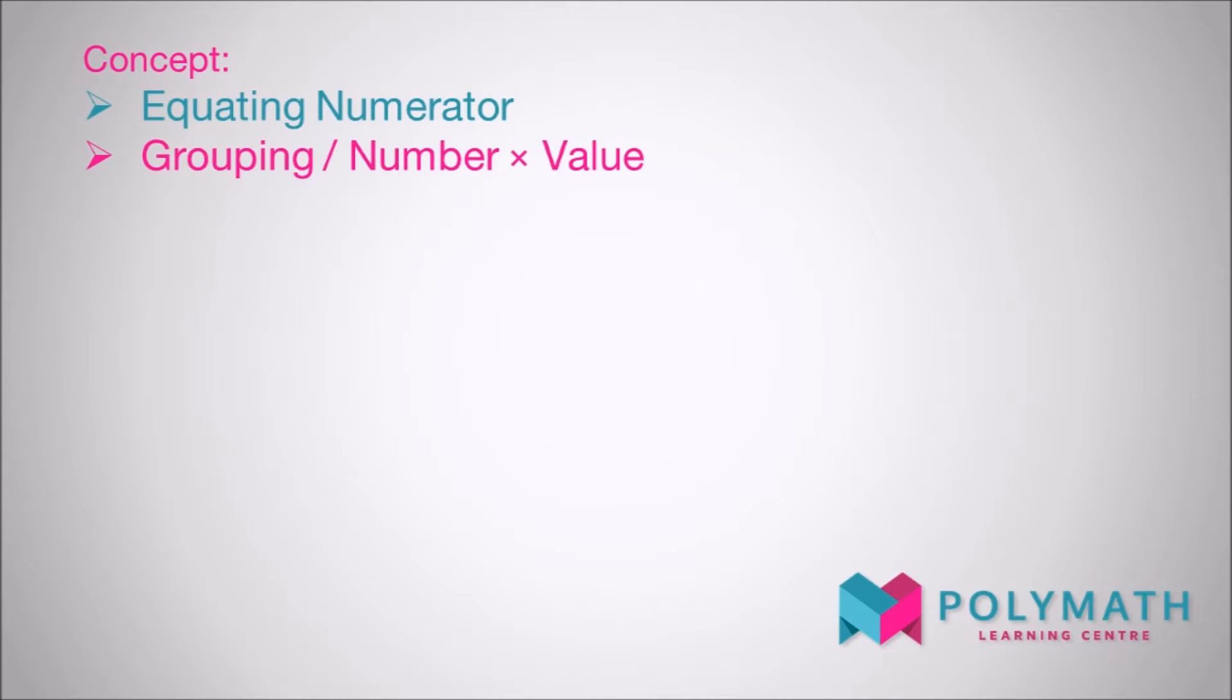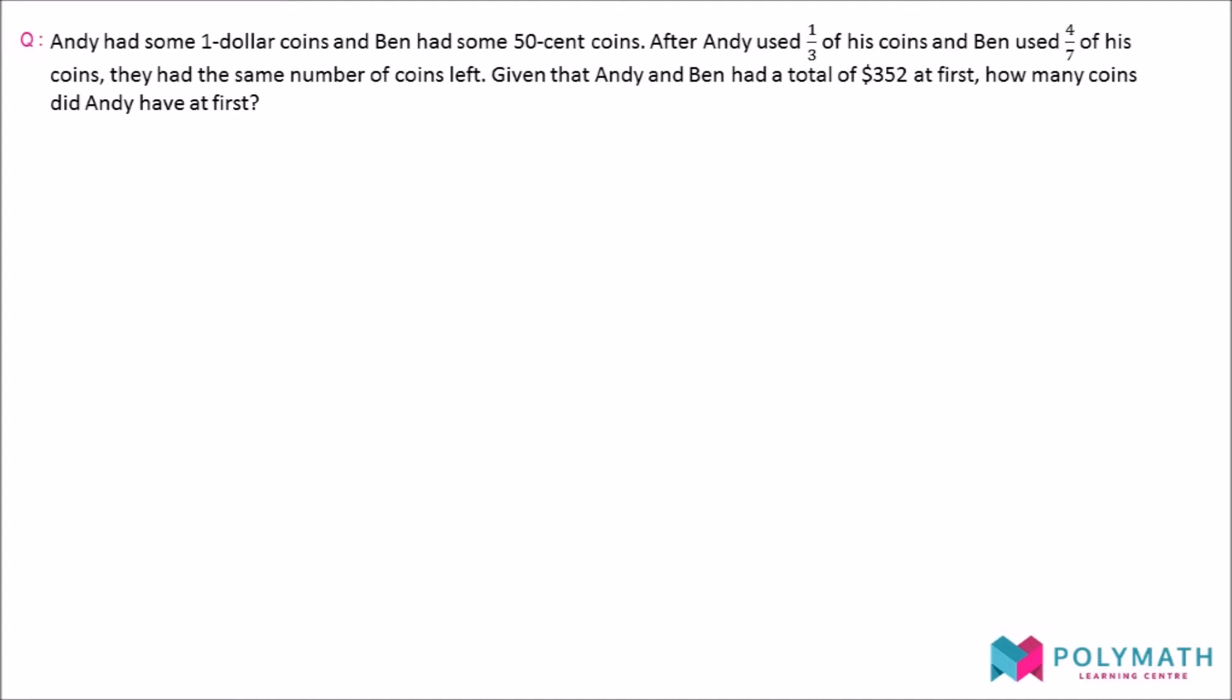The question is: Andy had some $1 coins and Ben had some $0.50 coins. After Andy used one third of his coins and Ben used 4 over 7 of his coins, they had the same number of coins left.